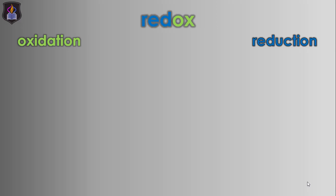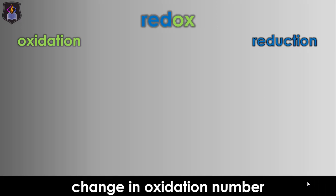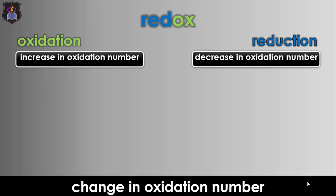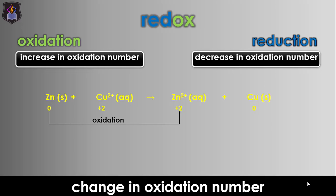Lastly, let's study oxidation and reduction in terms of change in oxidation number. Oxidation is an increase in the oxidation number of an element, while reduction is a decrease in the oxidation number of an element in a reaction. Let's consider the reaction between zinc dust and copper(II) ions. In this reaction, zinc is oxidized to zinc ion as its oxidation number increased from 0 to +2, while copper(II) ion is reduced to copper metal as its oxidation number decreased from +2 to 0.